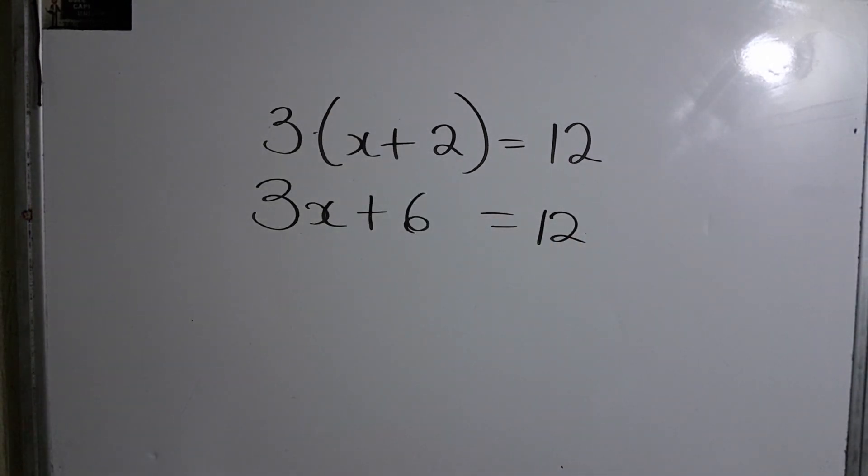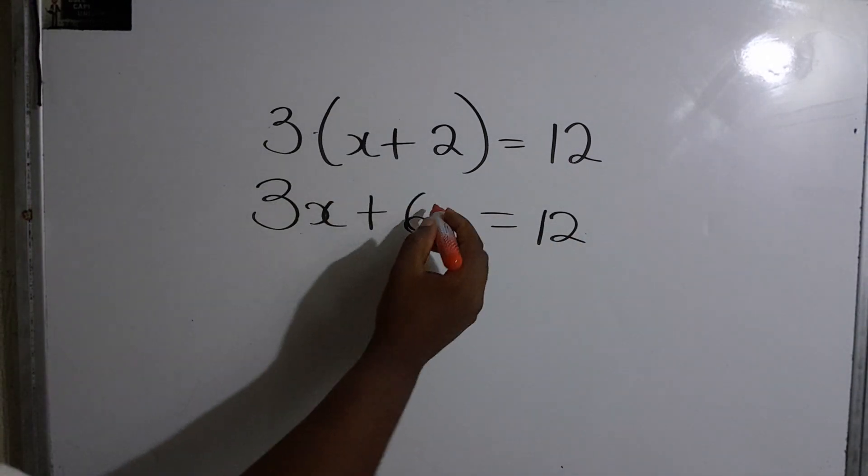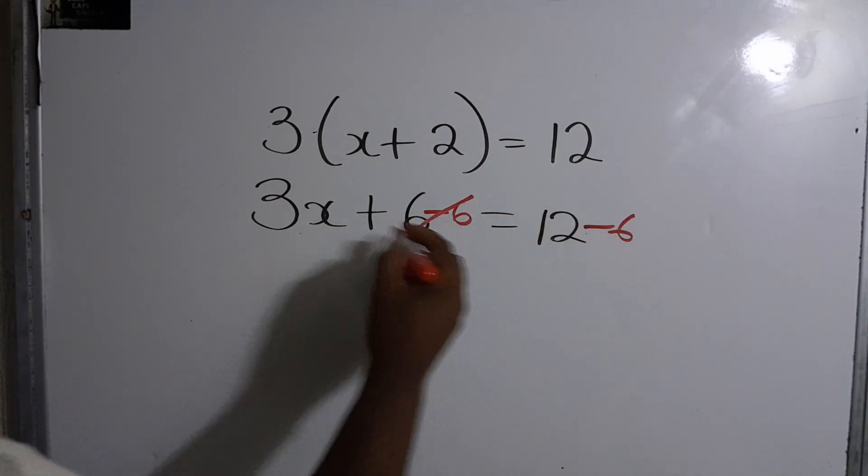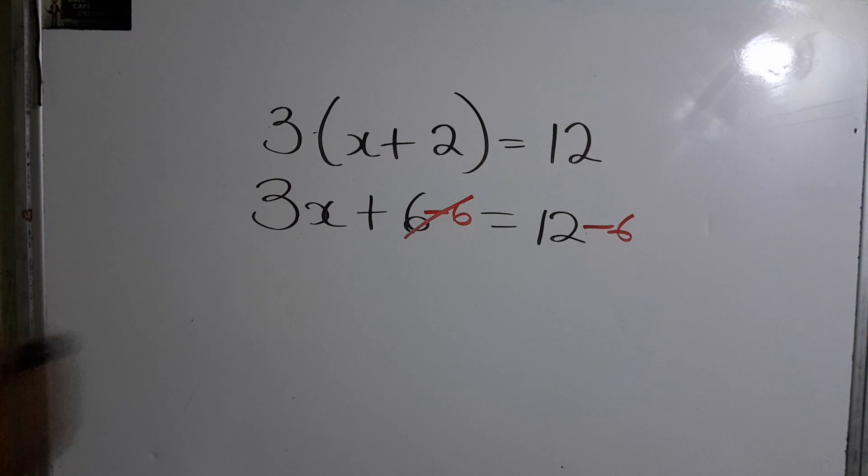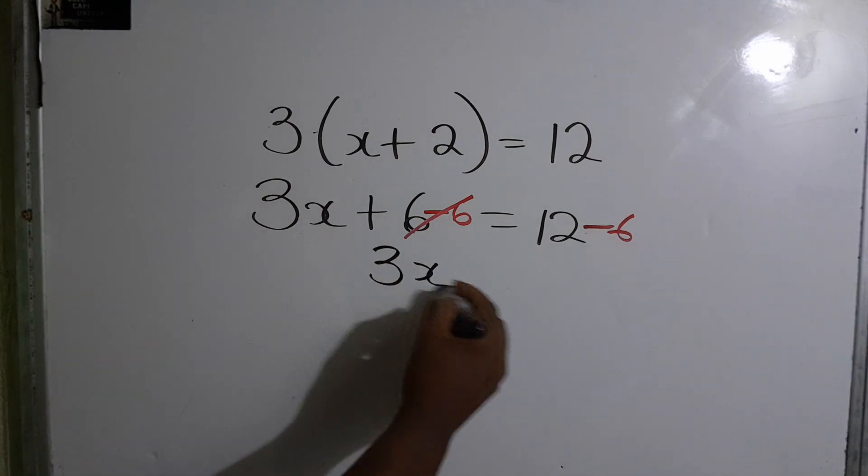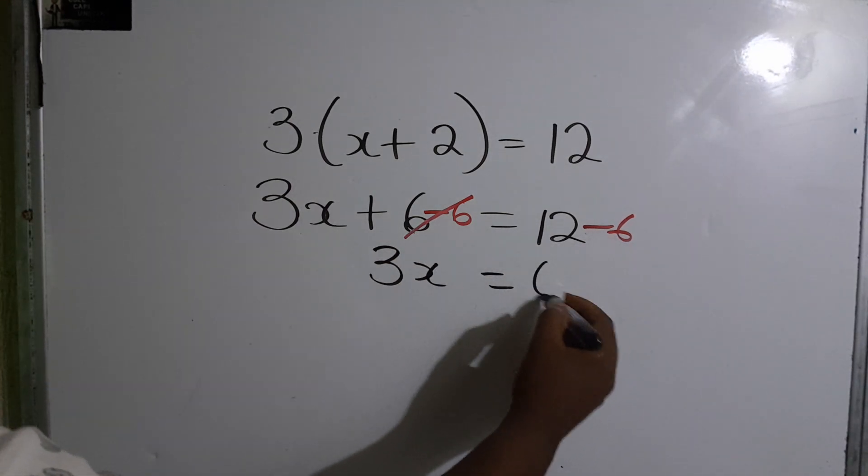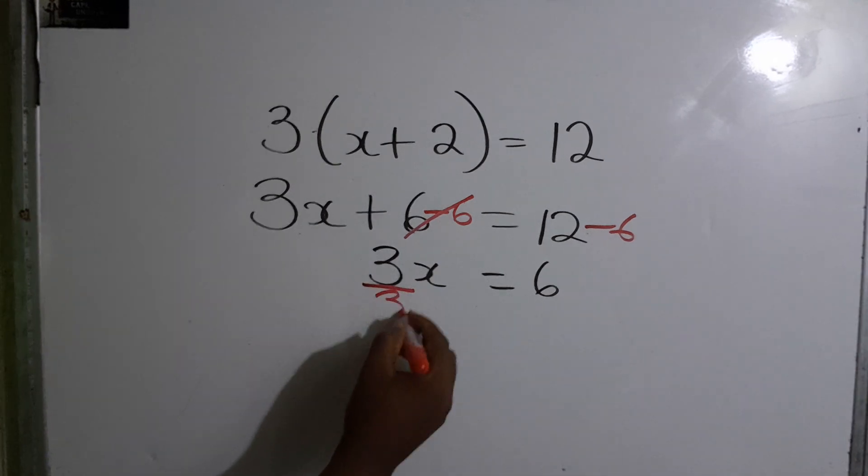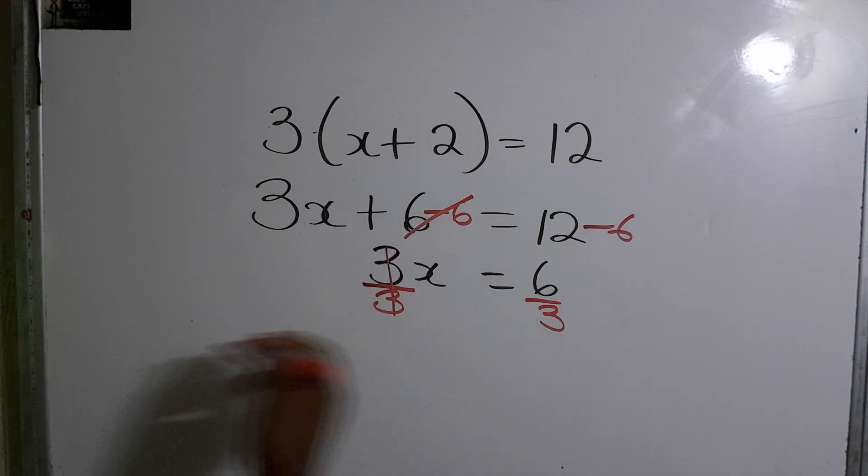It's back to what we did previously. So we minus 6 from both sides. And now we are left with 3x. 12 take away 6, that will give us 6.